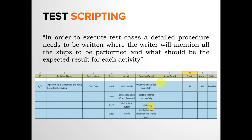Now, test scripting. In order to execute test cases, a detailed procedure needs to be written where the writer will mention all the steps to be performed and what should be the expected result for each activity. As shown here, there is the test case name — login with valid credentials — then the prerequisites for this particular test. For each step, there is an activity mentioned. There is a column for expected result and actual result. The expected result column is filled at the time of writing the test script, and the actual result column is filled at the time of test execution. Similarly, you have to set the priority, the author, and the status of the test case.